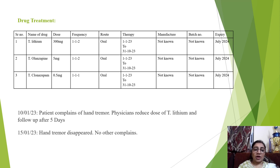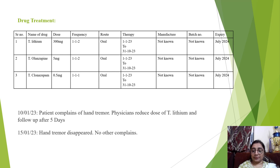After 10 days of the prescription, the patient complained of hand tremor. The physician reduced the dose of lithium, and on follow-up after five days, the hand tremor disappeared with no other complaints. The culprit drug was lithium — after reducing the dose, the tremor disappeared, demonstrating a dechallenge response.